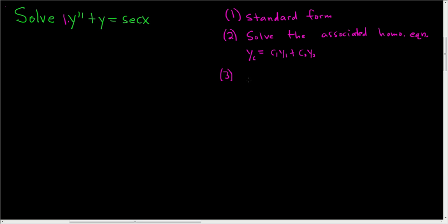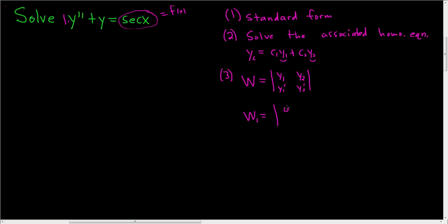Step 3: we compute three determinants. The first one is the Wronskian of y1 and y2 — you have y1, y1 prime in the first column, and y2, y2 prime in the second. Then compute W1: replace the first column with 0 and f(x), keeping the second column as y2, y2 prime.